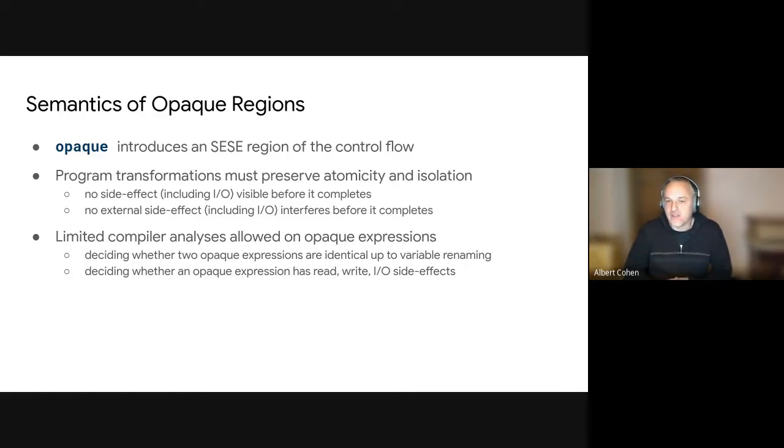So again, this is something that people have played with using existing, like, compilation mechanisms, like separate compilation, for example. But here, we make it a first-class mechanism. So opacity is introduced as a single entry, single exit region of the control flow. We can have whatever, like, uses, computation, side effects, I/O within such a region. The only hypothesis is that it terminates. And the program transformations are bound to some constraints with respect to what they can do on these opaque regions.